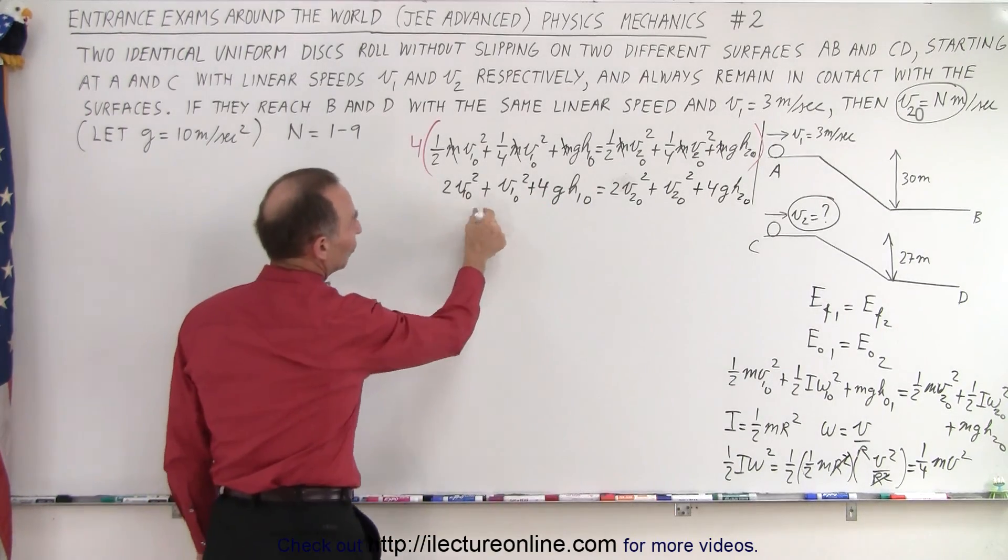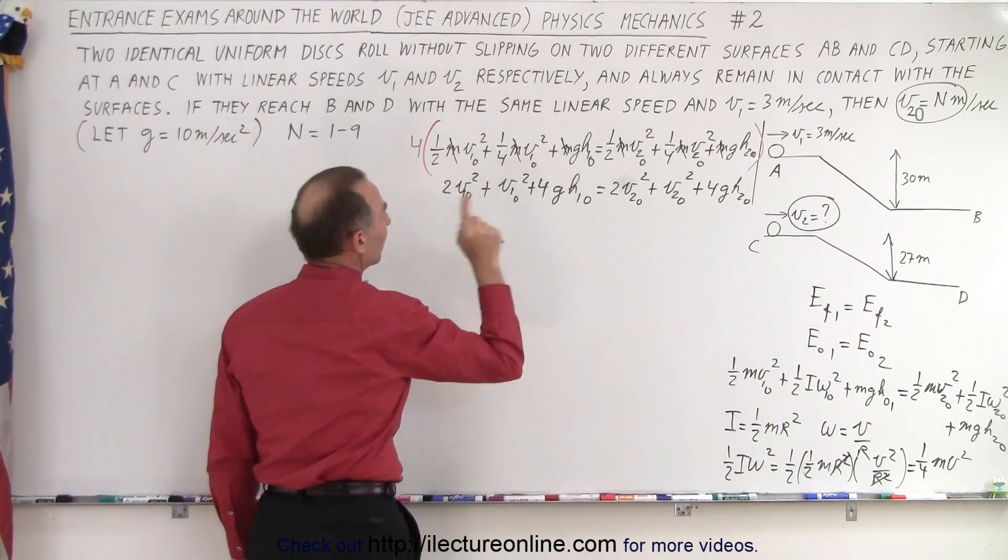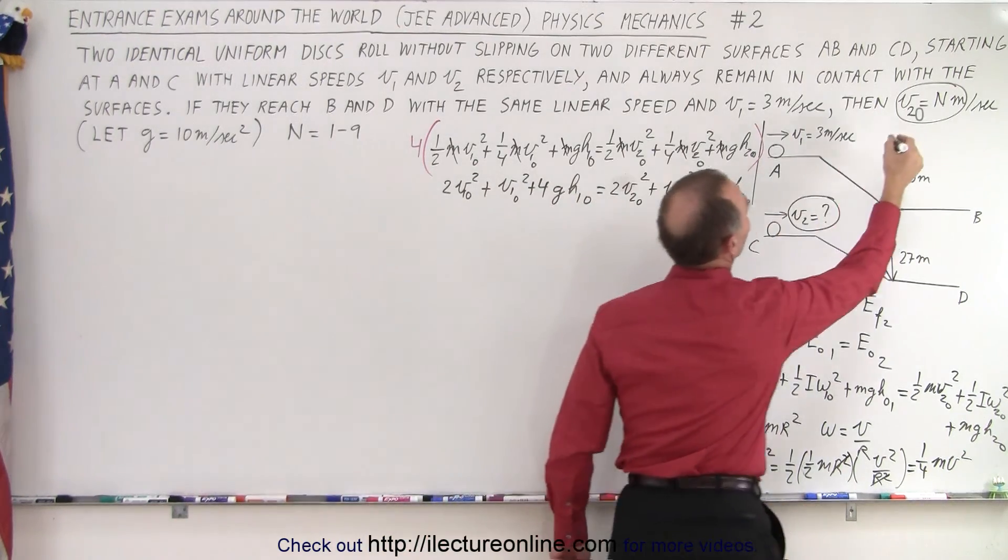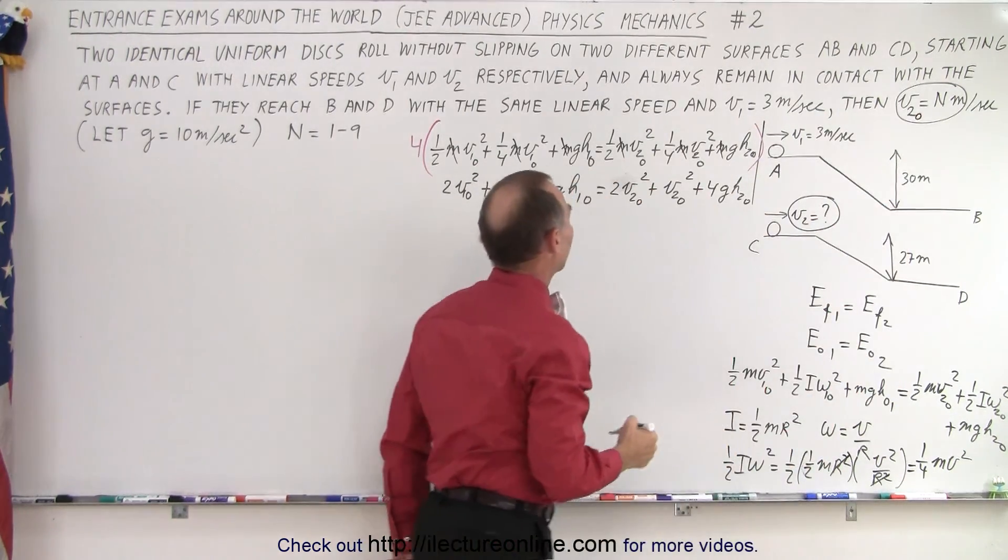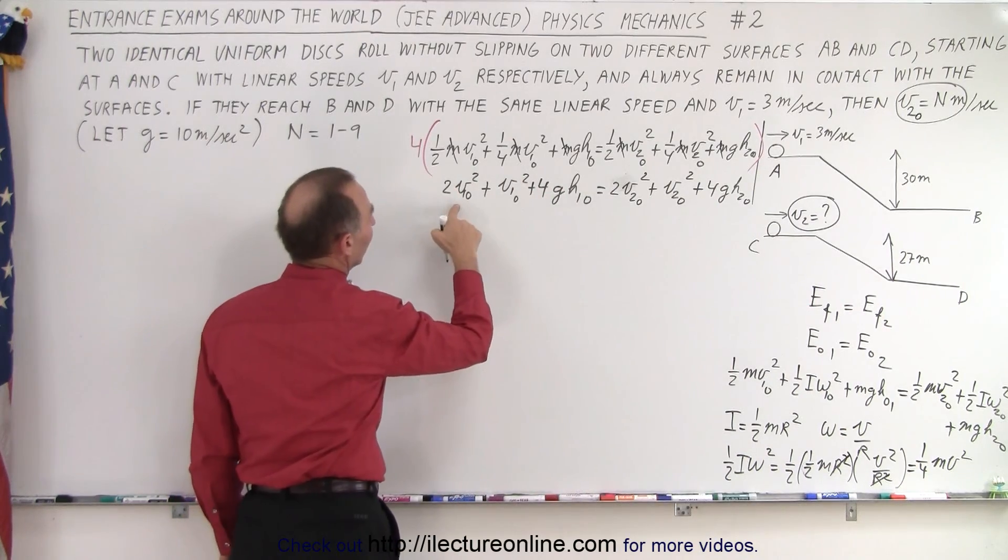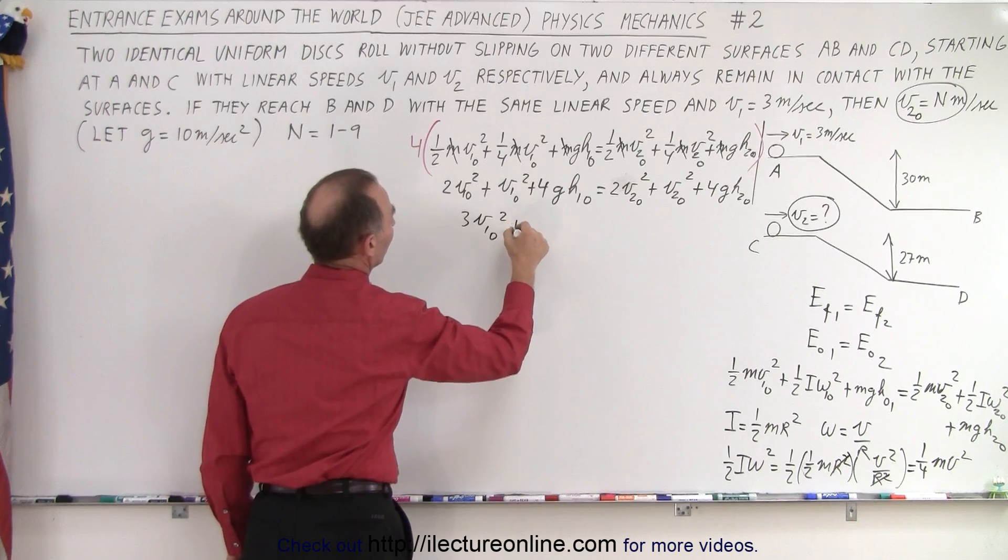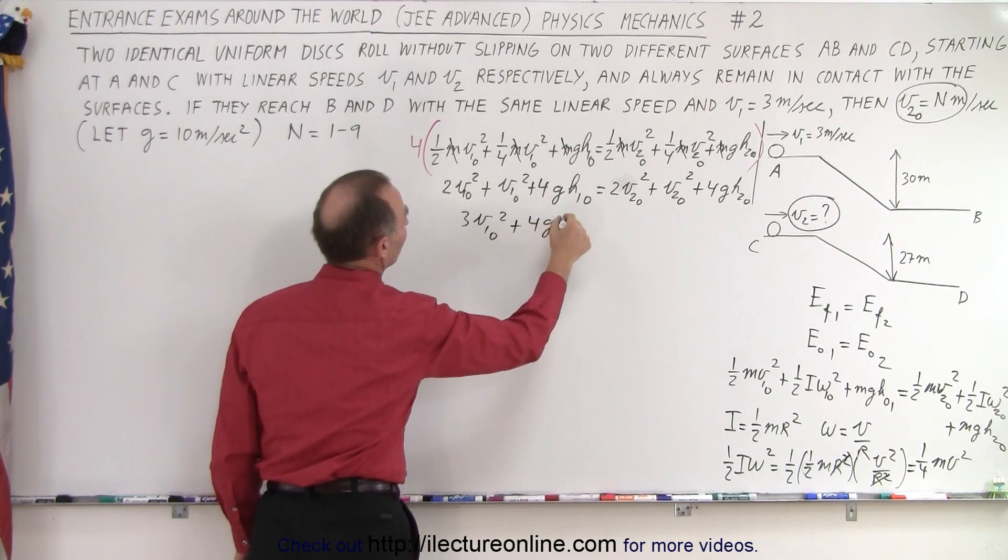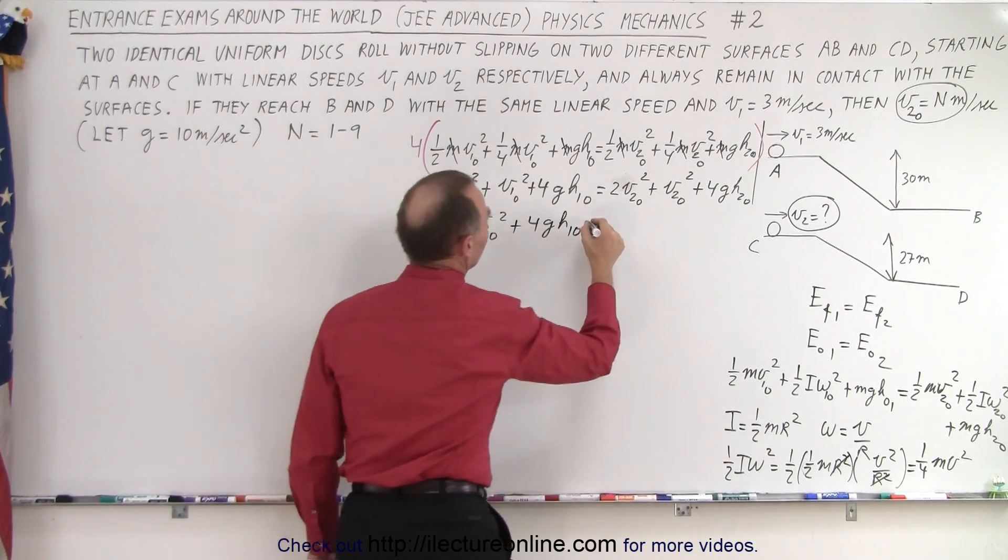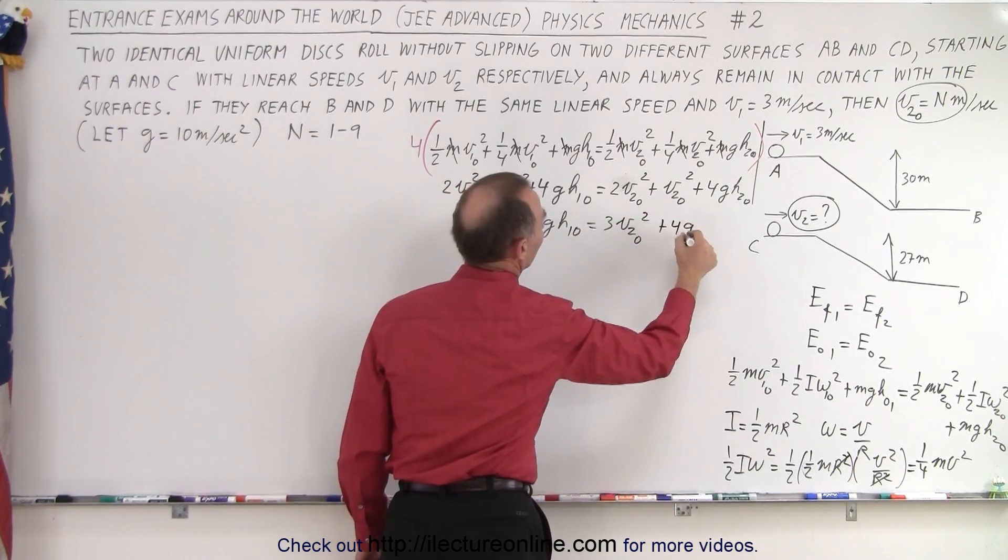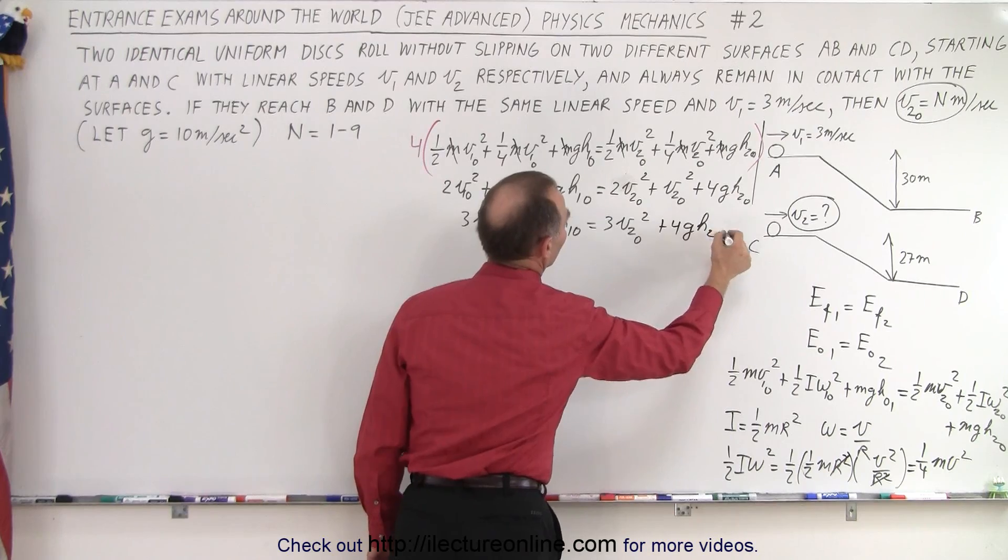All right, now we can combine these two. We can combine those two. Remember we're looking for v2 initial. That's what we're looking for, v2 initial. And so let's go ahead and add these together. This is 3 times v1 initial squared plus 4 g h1 initial is equal to 3 v2 initial squared plus 4 g h2 initial. And now I think we're ready to plug in the numbers to make things simpler.